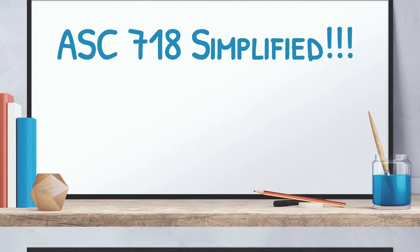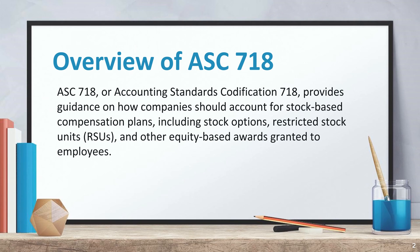Let's get started. ASC 718, or Accounting Standards Codification 718, provides guidance on how companies should account for stock-based compensation plans, including stock options, restricted stock units (RSUs), and other equity-based awards granted to employees.